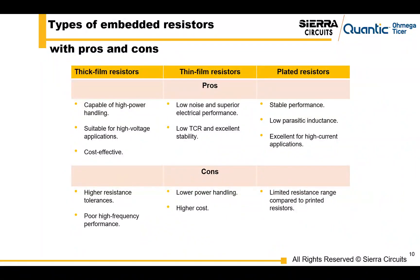In terms of the types of embedded resistors and their pros and cons: for high power or high voltage designs, you want to go with a thick film resistor; for more precision and stability, choose thin film resistors. There's also the option of plated resistors for high current and high frequency applications.